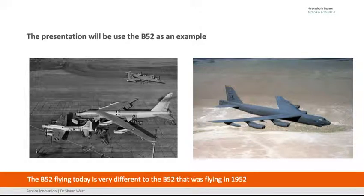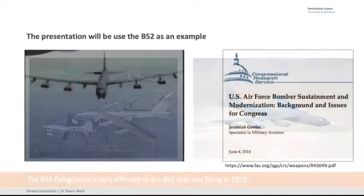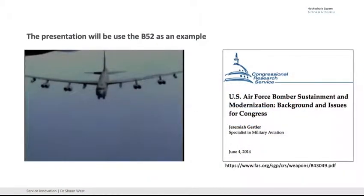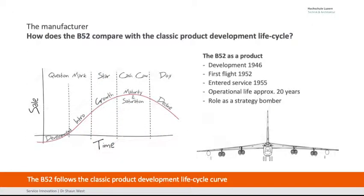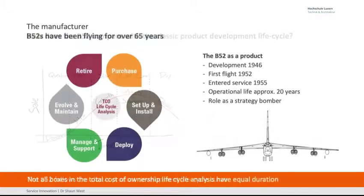The B-52 — a big bomber that first flew in 1952. They're going to extend its life again and again. Its operational life was estimated to be 20 years, but now it's flying over 65 years. It was planned to go to 80 or 90 years, and could go to 100 years — they're now talking about putting new engines in to make it quieter and more fuel efficient. It has a strategic bomber role and it could still be flying well into the future.